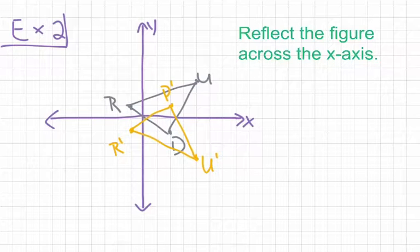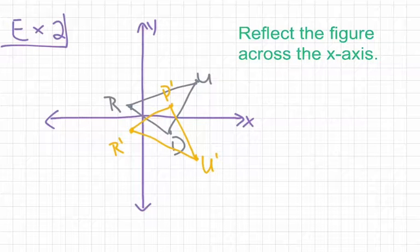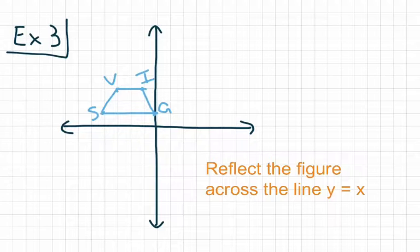Even though the figures overlap, we still have a reflection of triangle RUD across the x-axis, resulting in R'U'D'. Let's take a look at one more example. I'm not sure you'll encounter a problem like this on MyHRW, but you will see problems like this next year in transformations as a freshman. For example 3, we have a trapezoid VIGS, and we want to reflect the figure across the line y equals x.